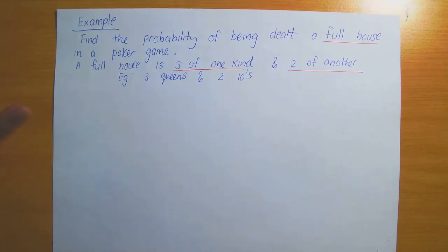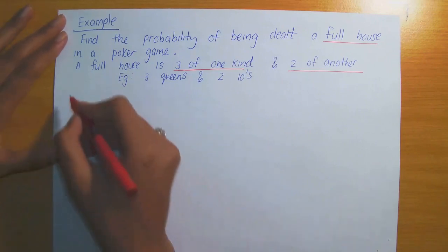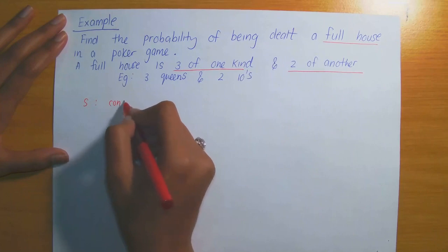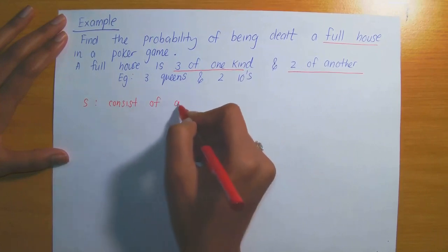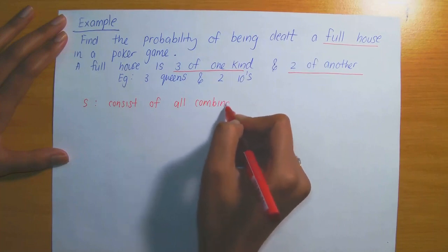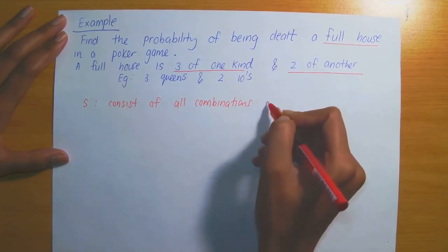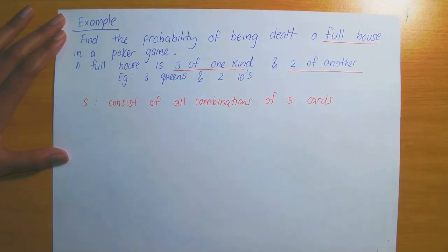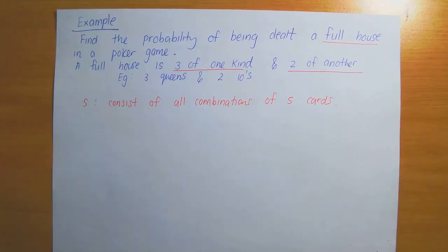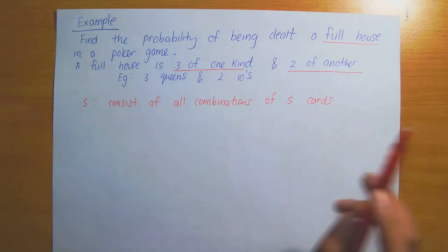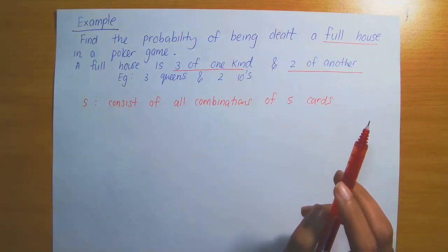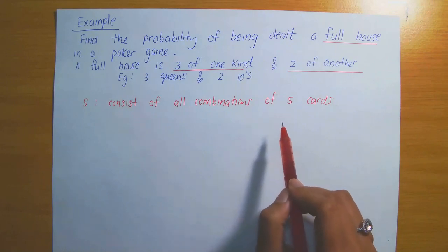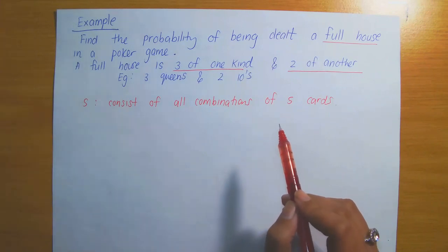To compute the probability, we need to understand the sample space. S will consist of all combinations of 5 cards — all possible ways you could be dealt 5 cards. Now, are we going to use permutations or combinations? First, are repeats allowed? In a deck of cards, every card is unique — there are no two Ace of Spades, for example.